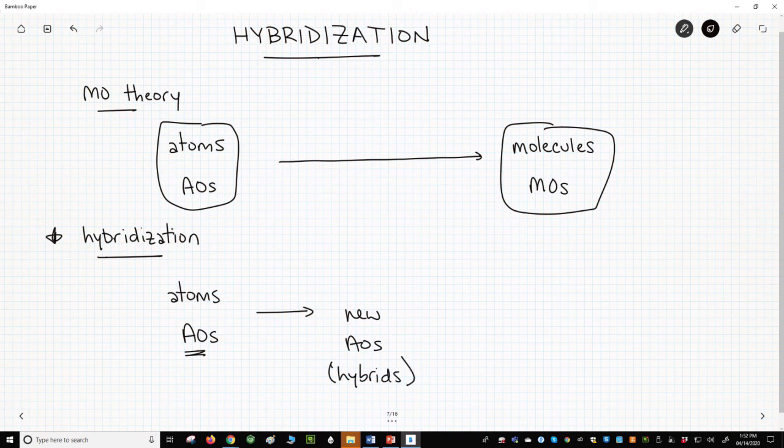sp, sp2, and sp3. These are still orbitals on an atom, still AOs.